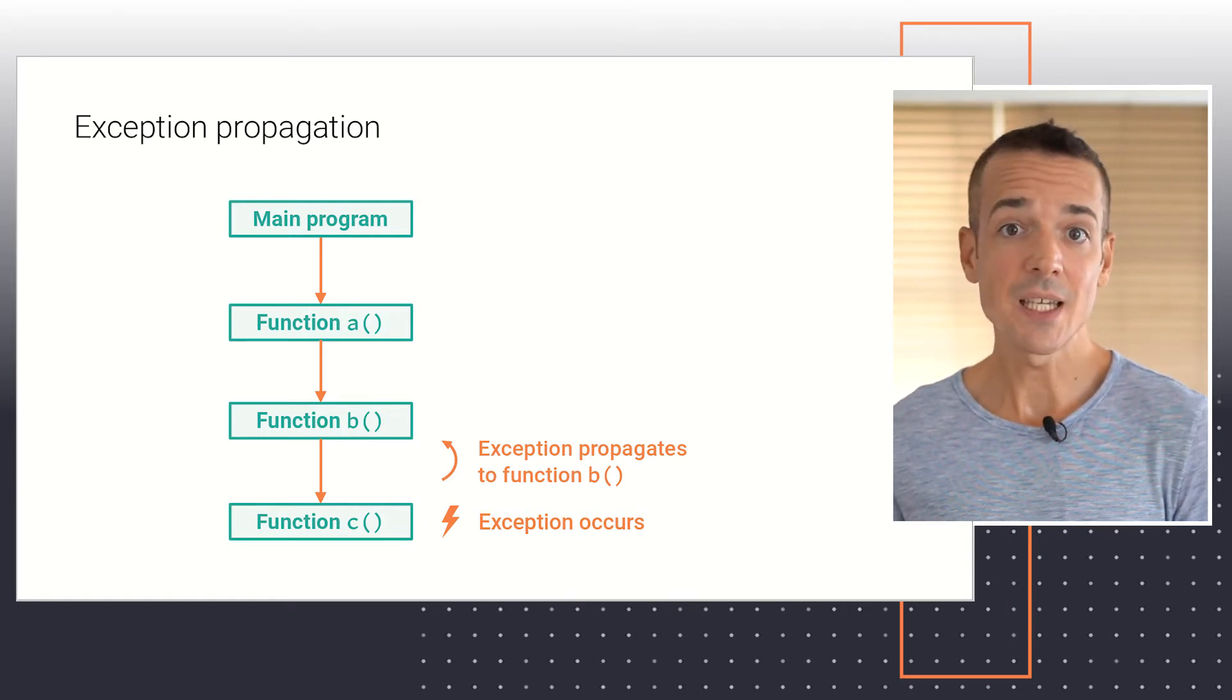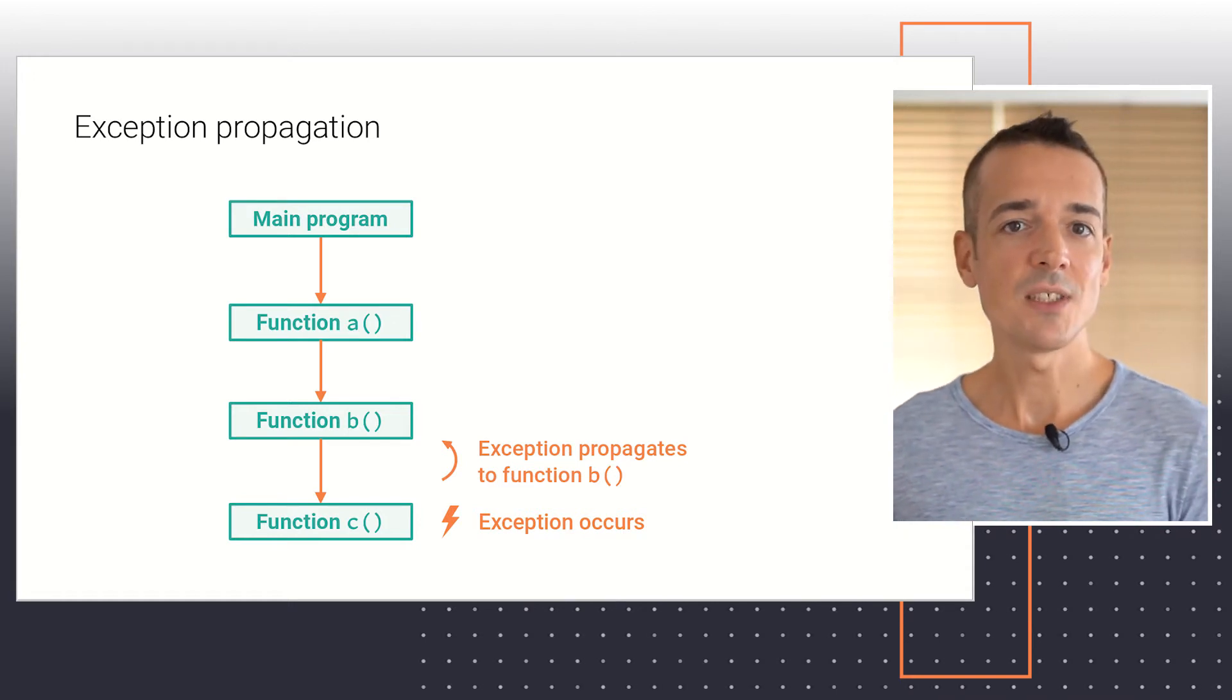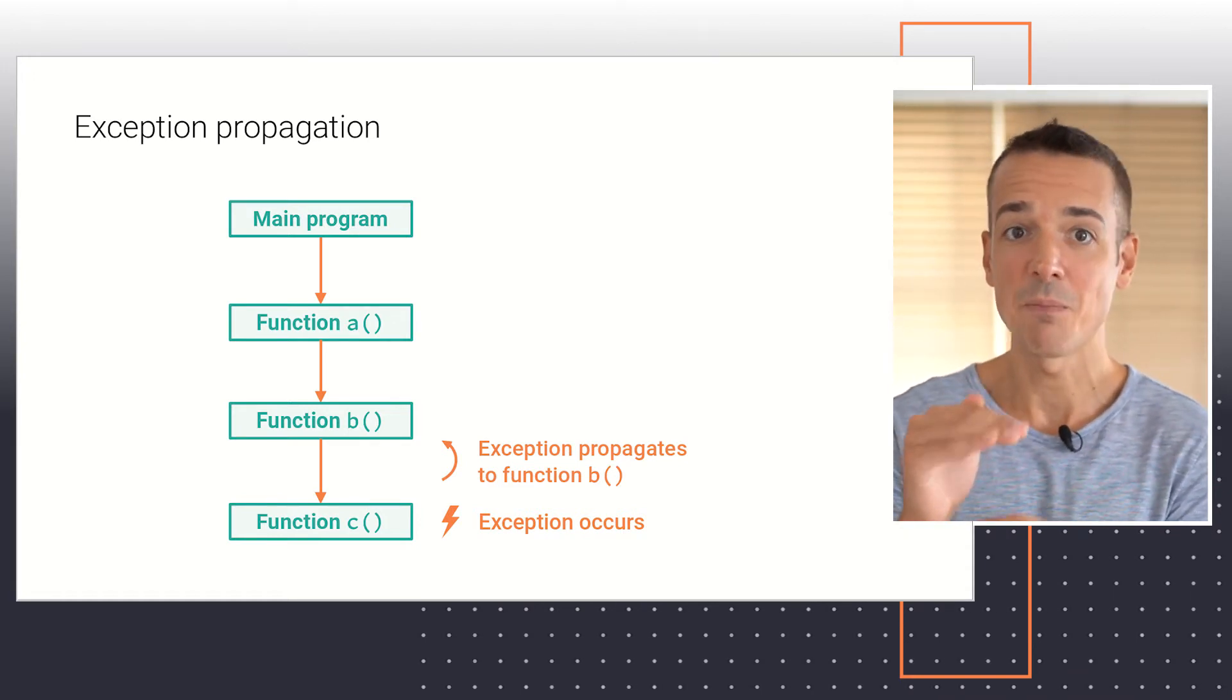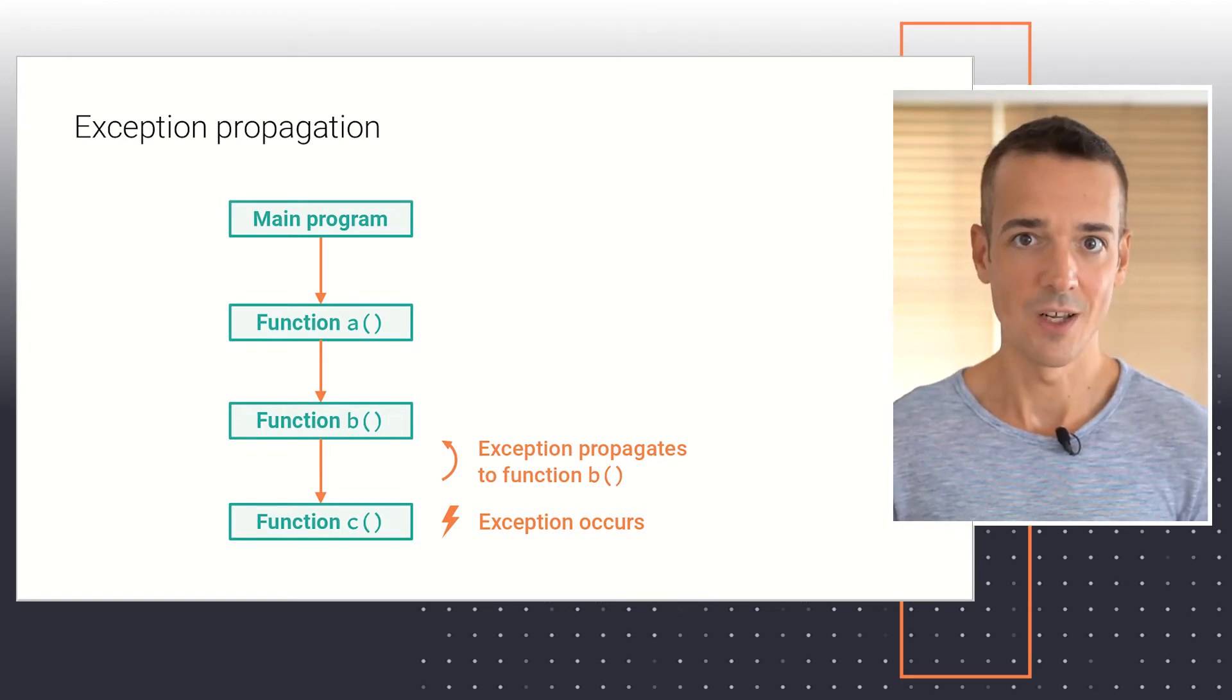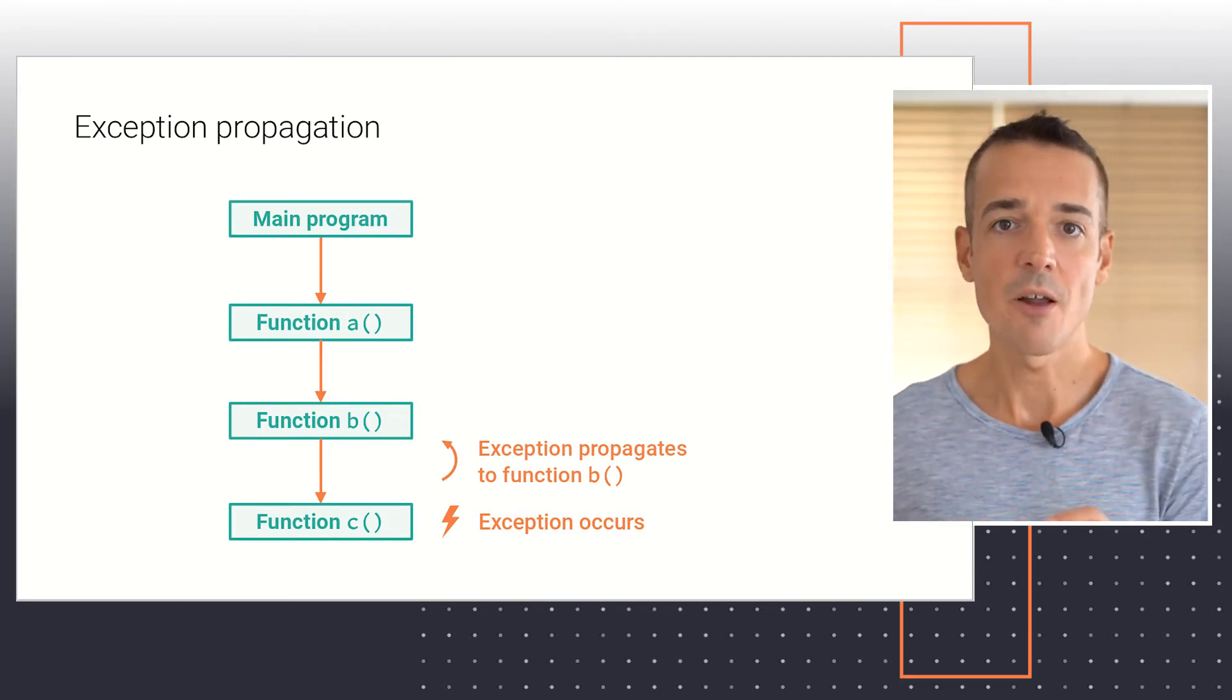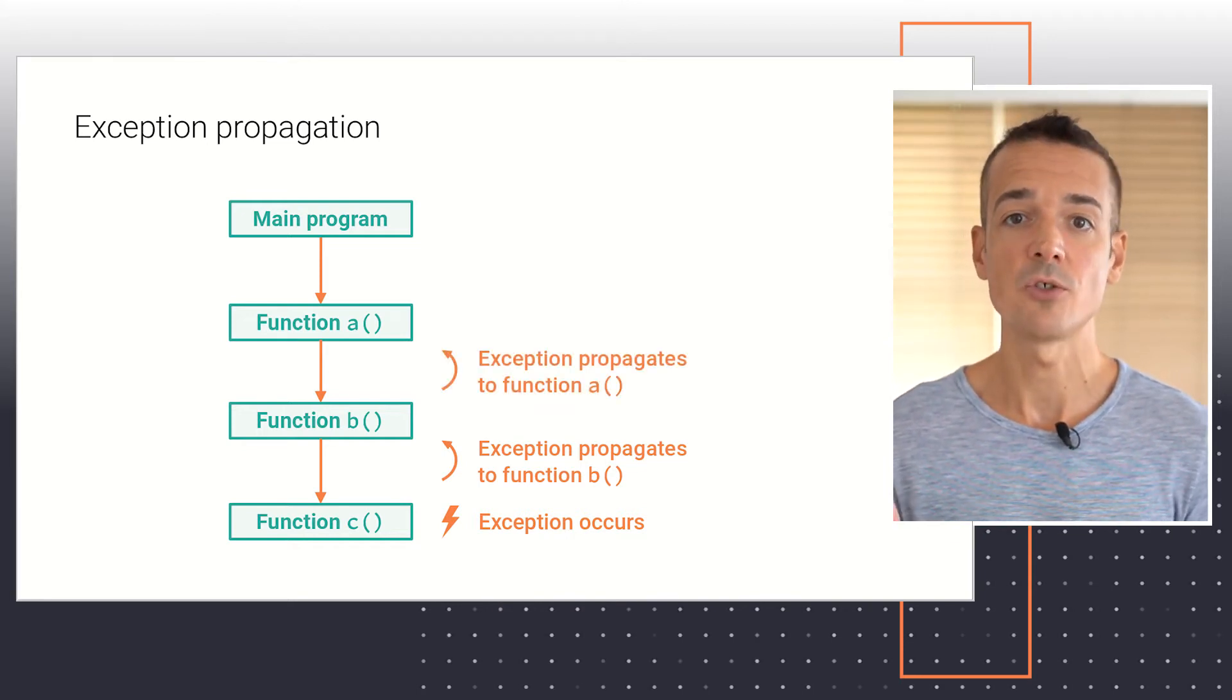Now it's up to function B to decide what to do with that exception. If the call to function C happened within a try-except block, the exception may be captured and handled at will. But if such block is not present in function B, the exception continues to propagate toward function A.